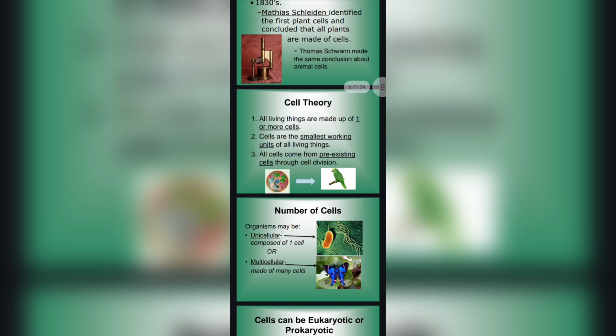Cell Theory: All living things are made up of one or more cells. Cells are the smallest working unit of living things. Cells come from pre-existing cells.